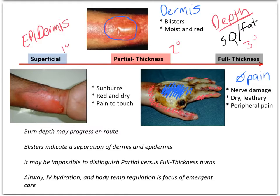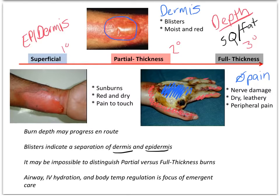I also want you to understand that burn depths may progress en route. I've given you the illustration of the patient I had that had chemical burns that progressed from superficial to partial thickness within 30 minutes all over his lower abdomen down into his feet — starting off with skin peeling and ending up with massive blisters covering everywhere the chemical had touched. Blisters indicate a separation of the dermis and the epidermis. Airway, IV hydration, and body temperature regulation is the focus of emergent care.